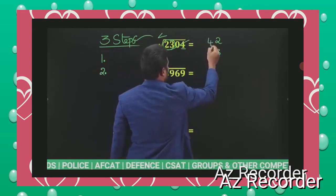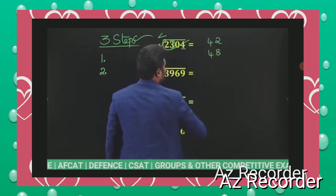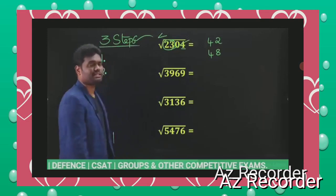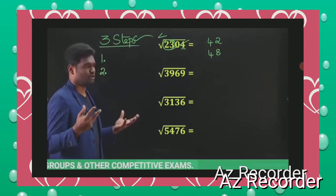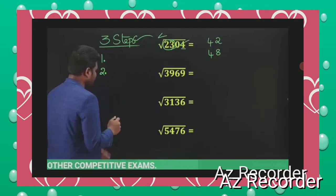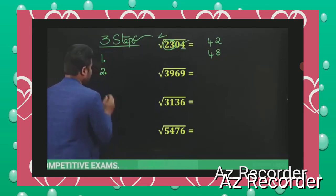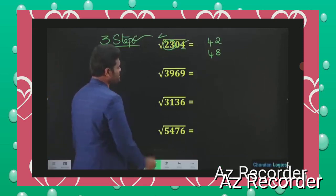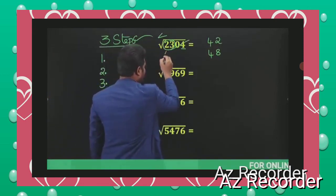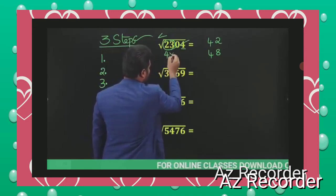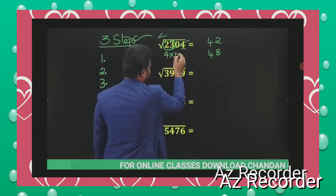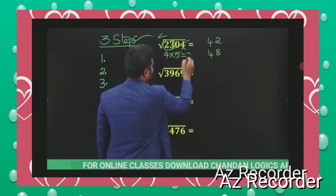So you note down 4, and you write it as 4_, meaning either 42 or 48 will be your answer — but which one we don't know yet. That brings us to the third step, which is the deciding step. In the third step, you take that base number 4 and multiply it by the next number, which is 5. So 4 × 5 = 20.